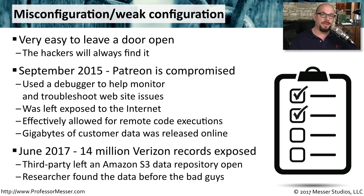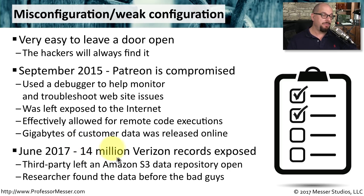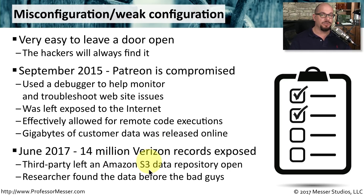An example of a weak configuration was found in June 2017, when a security researcher found 14 million Verizon customer records exposed publicly to the internet. They were actually left on an Amazon S3 cloud repository, but were left wide open with no authentication credentials at all. Fortunately, this researcher found the data before anybody else could gain access to it. But you can see how a single misconfiguration can turn into a significant security breach.